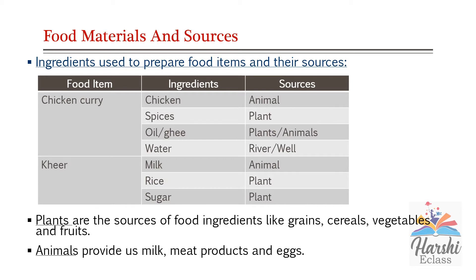Cows, goats, and buffaloes are some common animals which give us milk. Milk and milk products like butter, cream, cheese, and curd are used all over the world. For making one food item, we need many ingredients.